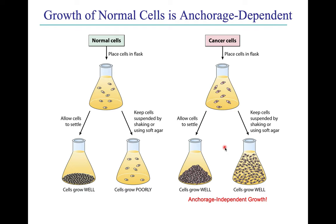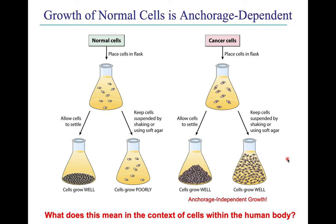The second key characteristic is loss of anchorage-dependent growth. Normal cells need to be anchored on a substrate. If you put a flask on an orbital shaker, the cells will not divide well at all if forced to remain in suspension — they need to be anchored to something in vivo, like other tissues, cell layers, or extracellular matrix. However, cancer cells have lost this dependence on needing to be anchored in order to grow, and will grow just fine in suspension.